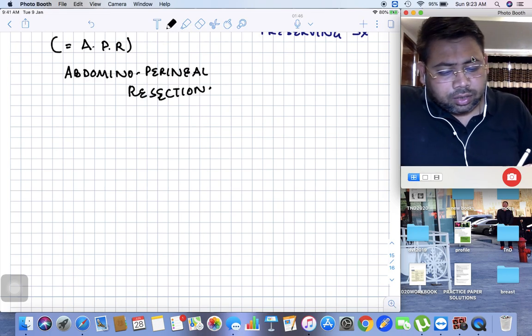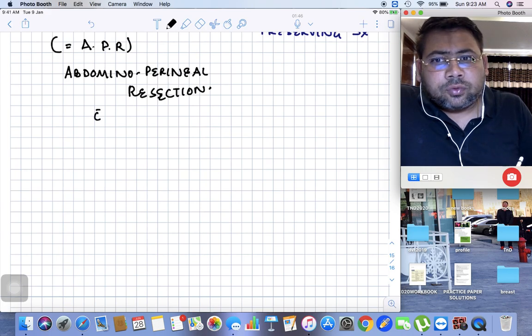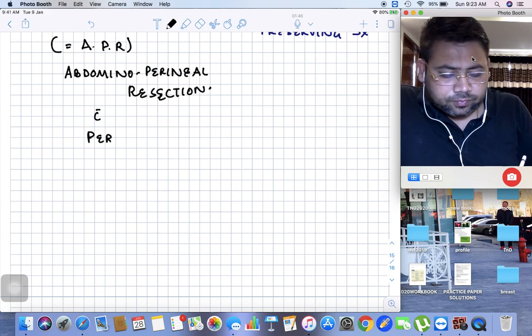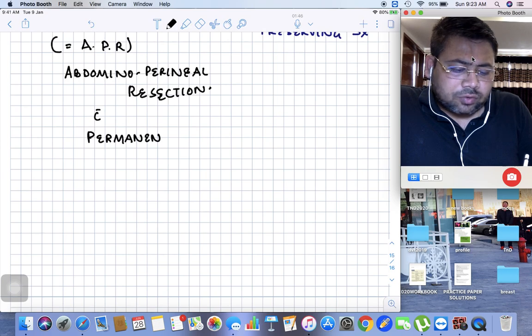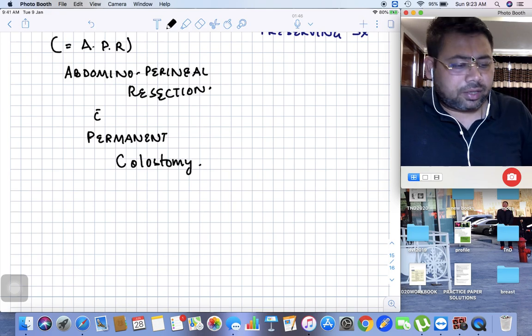When we talk about APR, we also have to do a permanent colostomy. APR is always complemented with permanent colostomy. Let me explain the concept of APR.